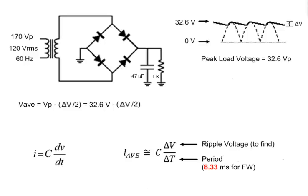Delta-t is the period of the output voltage, which we already know. It's always 8.33 milliseconds with a 60 hertz input voltage for a full wave rectifier. We also know the capacitance, 47 microfarads.